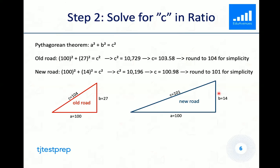In the next step, we will set up actual proportions to find the actual slopes in feet. So now, the ratio for the old road is 100 to 27 to 104. And the ratio for the new road is 100 to 14 to 101.